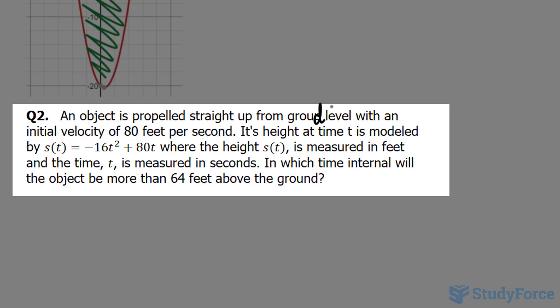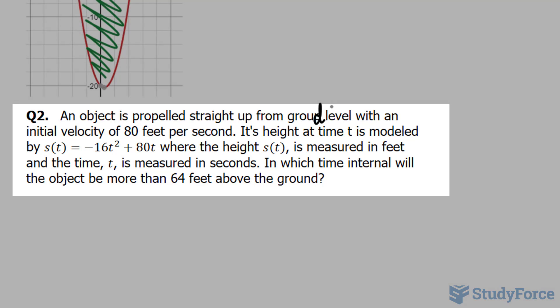This should read ground. Its height at time t is modeled by the following equation: negative 16t to the power of 2 plus 80t, where the height s(t) is measured in feet and time is measured in seconds. In which time interval will the object be more than 64 feet above the ground?